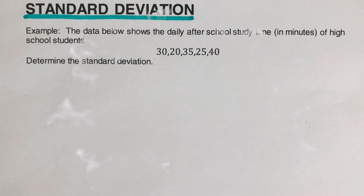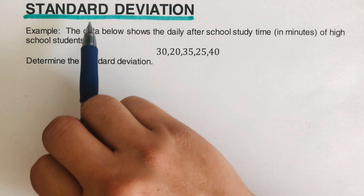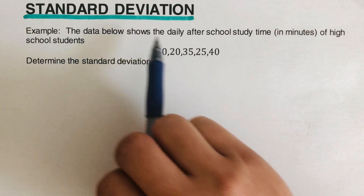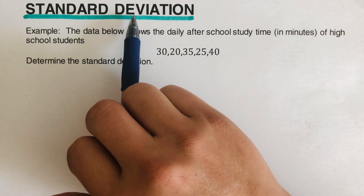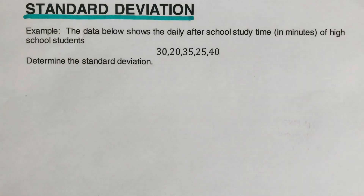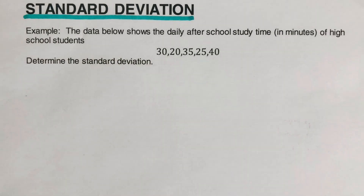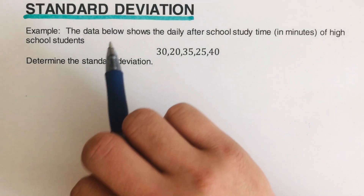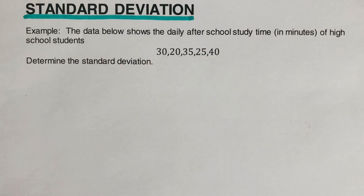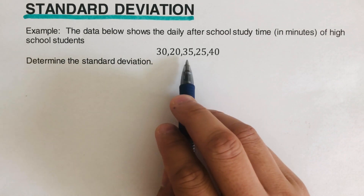Hello everyone. In this video we are going to determine the standard deviation of a given set of data. The word deviation comes from the root word deviate, which means being off from the norm. The norm we're referring to for standard deviation is the mean. Standard deviation measures the amount of variation or dispersion of a given set of data from the mean.